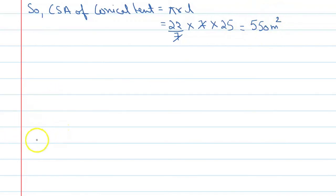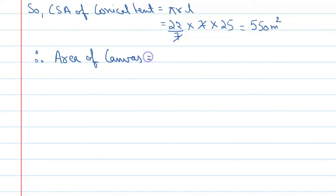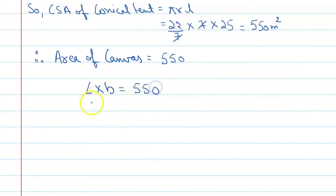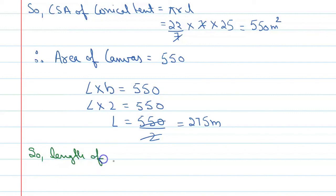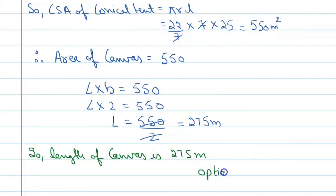The area of the canvas equals the curved surface area of the conical tent, which is 550 m². The canvas is rectangular in shape, so area = L × B = 550. Since B is given as 2 meters, we have L × 2 = 550, therefore L = 275 meters. The length of canvas is 275 meters, and the correct option is B.